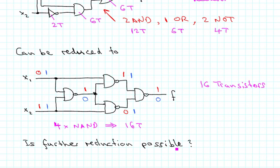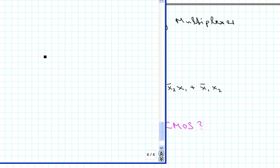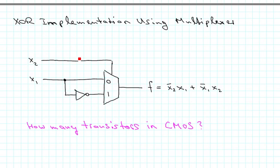Here is another way to implement the XOR gate using a multiplexer, where one input controls which multiplexer input goes to the output. If x2 is 0, then x1 is fed through to the output, creating the term x2' · x1. If x2 is 1, then x1' is fed through, creating the term x2 · x1'. So we do indeed have an XOR implementation this way.